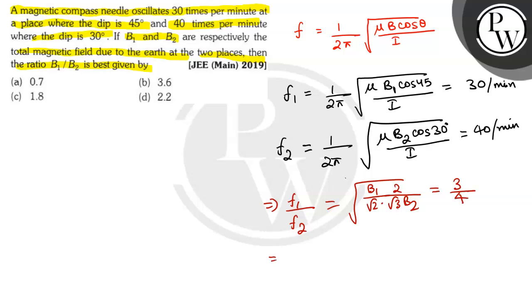Or root 2 B1 over root 3 B2 equals 3 by 4. On squaring both sides, we get root 2 B1 by root 3 B2 equals 9 by 16.